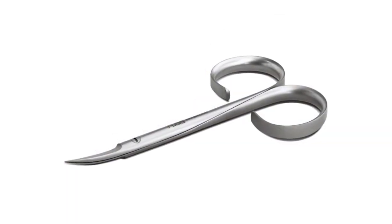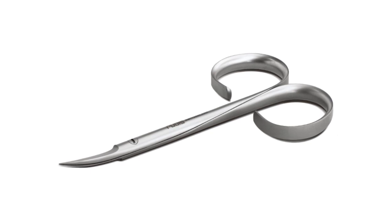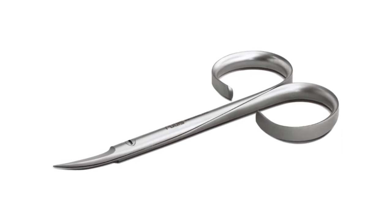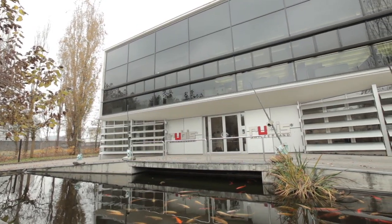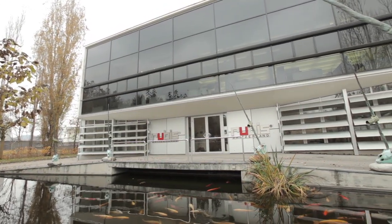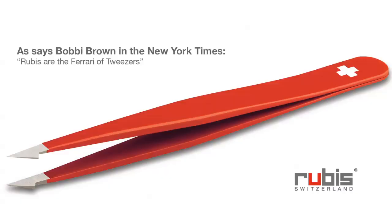Sauros scissors have a wider and thicker profile and cut the much stronger toenails without any problem. Rubis stands for a premium product with an international reputation, excellent price-performance ratio. As Bobby Brown says in the New York Times, Rubis are the Ferrari of tweezers.